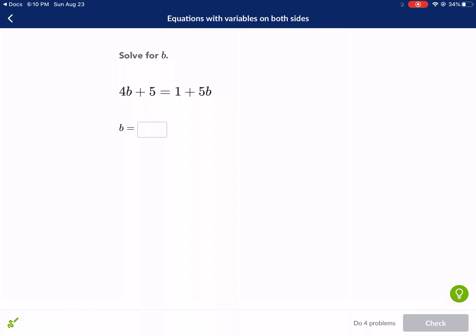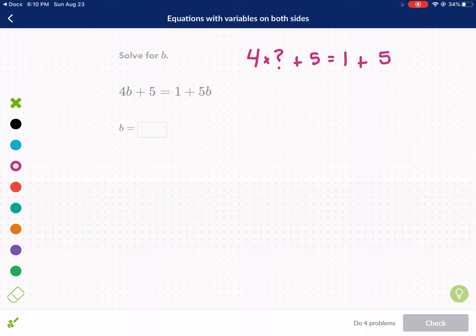The first prompt is solve for b. We have 4b plus 5 equals 1 plus 5b. Now this is the equivalent of having 4 times some question mark plus 5 equals 1 plus 5 times that same question mark.